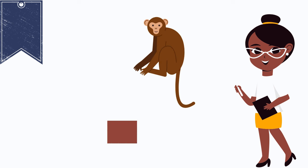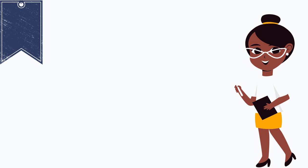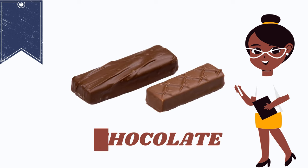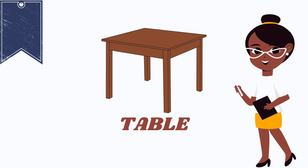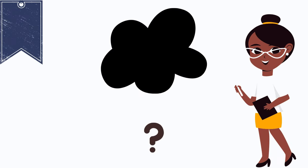Do you know which color is this? Yes, this is the color brown. It spells B-R-O-W-N. Brown is a monkey, brown is a chocolate, brown is a table.